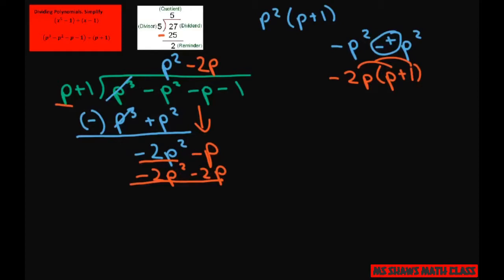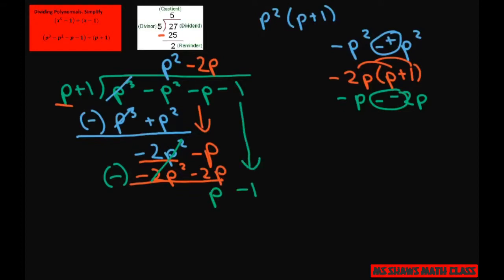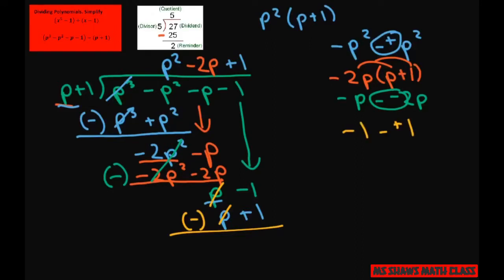Subtract — these cancel. Negative p minus a negative 2p: minus a negative is positive, so that gives you a positive p. Bring down the negative 1. What times p gives me p? That's plus 1. Multiply to get p plus 1, then subtract. Negative 1 minus a positive 1 is negative 2, so our remainder equals negative 2.